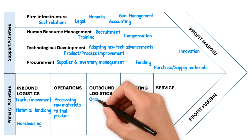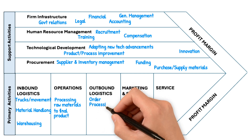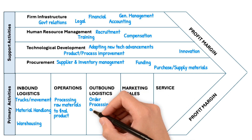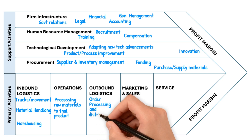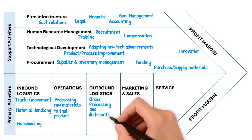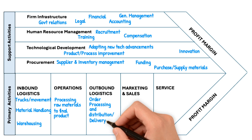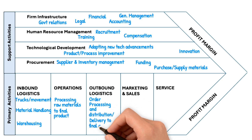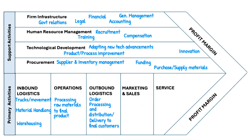The third primary activity is outbound logistics. Since we have manufactured something and made a final product, we now need to outbound it — sell it and send it out to the market. This includes order processing, distribution, and delivery to the final customers. We call this outbound logistics.